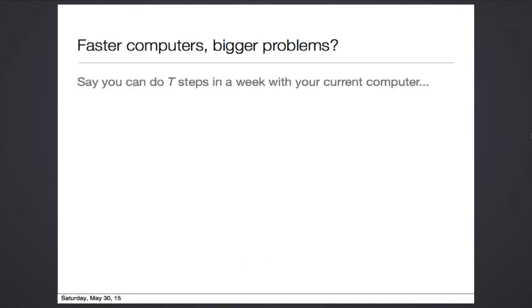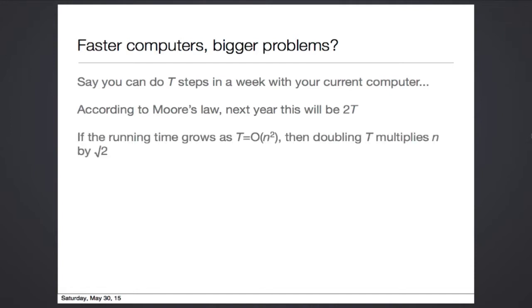Say you can do t steps in a week on your current computer. According to Moore's law, next year this will essentially be 2 times t. Moore's law may be ending, but let's pretend that it's going to go on forever. If you have a problem whose running time is big O of n squared, so some constant times n squared,